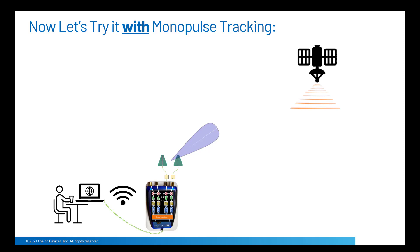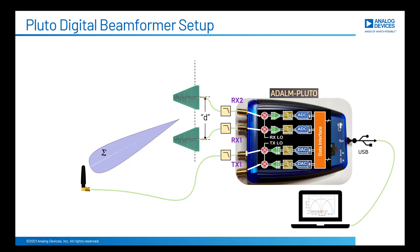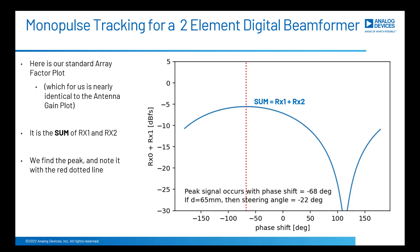This is an extremely clever technique first demonstrated in the 1940s. Let's walk through exactly how it works. This is what our beam looks like — let's call it the sum beam, because as we saw in the last video, it is the summation of RX1 and a phase-shifted RX2. This is a plot of the array factor of the antenna, and for small steering angles this will be very close to the actual antenna pattern.